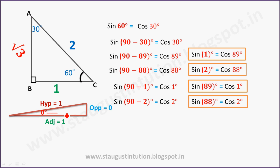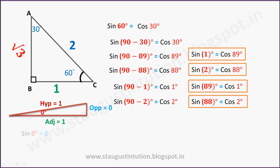Sin equals opposite divided by hypotenuse, which gives 0 by 1, equal to 0. That is why sin 0° = 0. Because for 0 degrees, the opposite side is 0 while hypotenuse is 1. Hypotenuse and the opposite side correspond to 90 degrees.